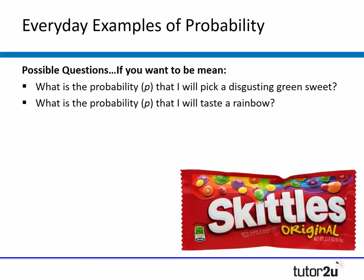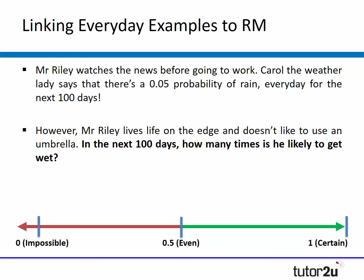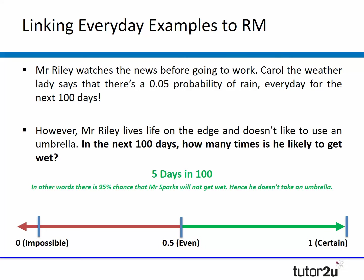What you want to quickly do is get students working out probability in terms of something that links to research methods. You might give them a scenario like: Mr. Riley watches the news and Carol the weather lady says there's a 0.05 probability of rain every day for the next 100 days. Mr. Riley doesn't use an umbrella — so in 100 days, how many times is he likely to get wet? Students quickly work out that's five days, expressed as 0.05.